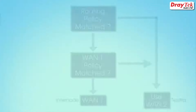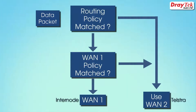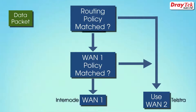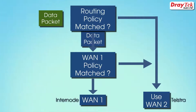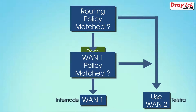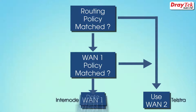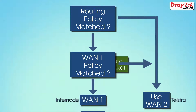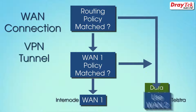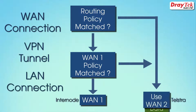First the incoming data packet is inspected. Then if a routing policy matches the data and its source or destination address, the data packet is forwarded out through the appropriate interface. This could be a WAN interface, VPN tunnel, or LAN connection.